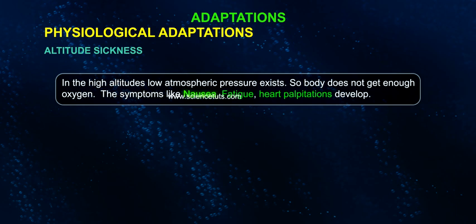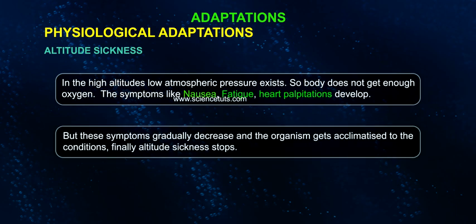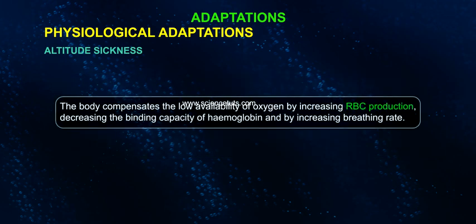Symptoms like nausea, fatigue, and heart palpitations develop, but these symptoms gradually decrease and the organism gets acclimatized to the conditions. Finally, altitude sickness stops. The body compensates for the low availability of oxygen by increasing RBC production, decreasing the binding capacity of hemoglobin, and by increasing breathing rate.